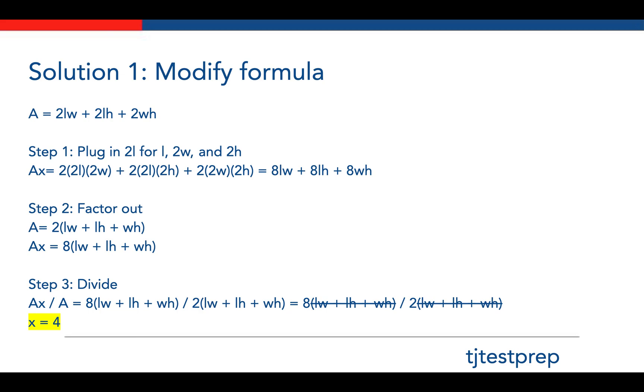Now to solve for X, you would just divide the second equation by the first equation. So you get AX over A equals 8 times LW plus LH plus WH over 2 times LW plus LH plus WH. Dividing, you take the second formula and divide that over the first formula.